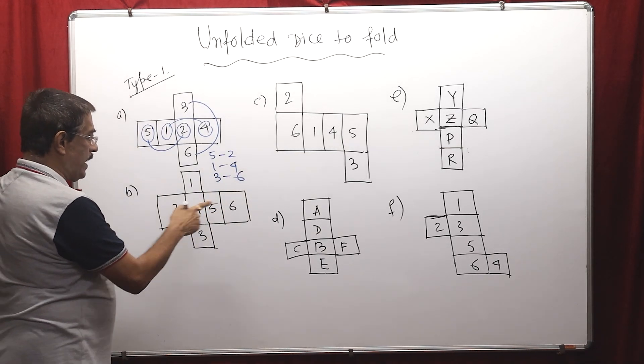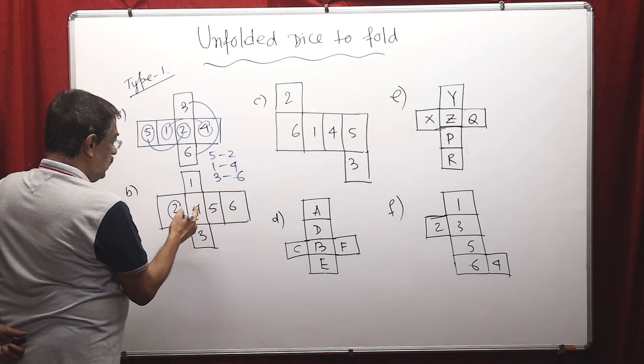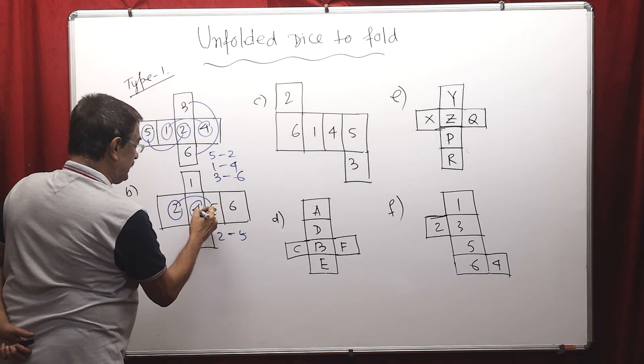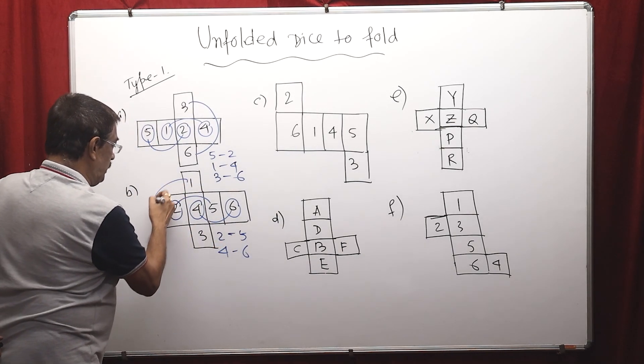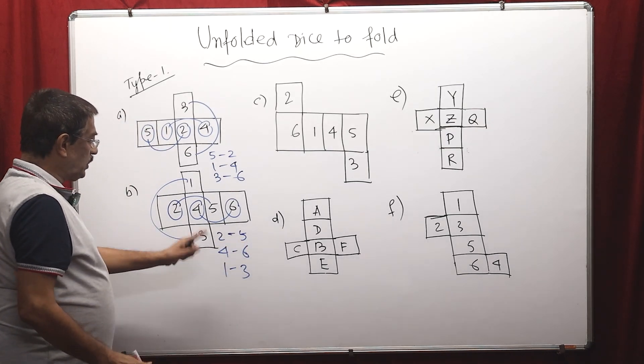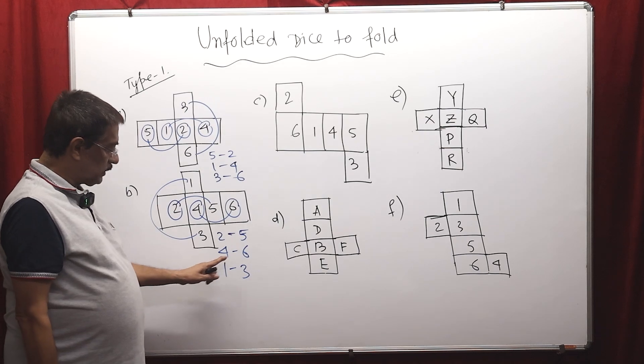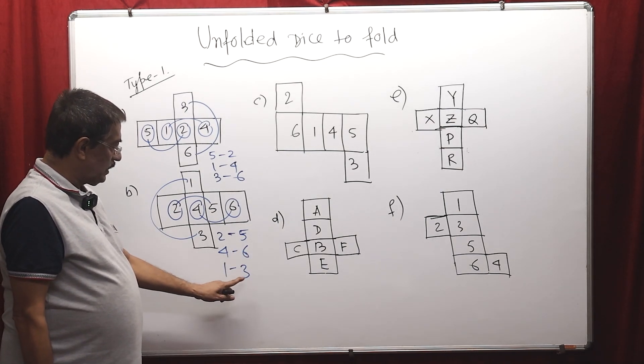From here, we have to select from here to get the maximum box. Start from here, skip one box, 2 to 5. Then 4 to 6. Then 1 to 3. So we can find easily which are the opposite phases. 2 opposite phase is 5, 5 opposite phase is 2, 4 opposite phase is 6, 6 opposite phase is 4, 1 opposite 3, 3 opposite is 1.